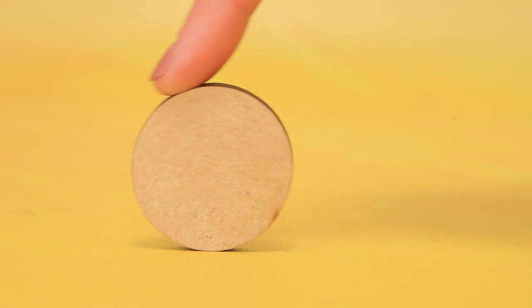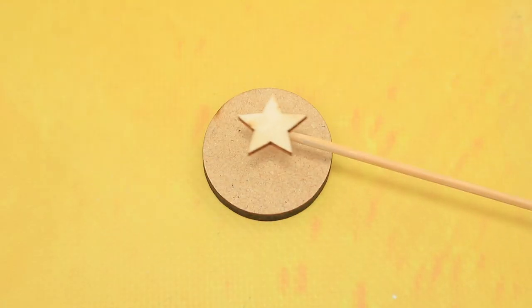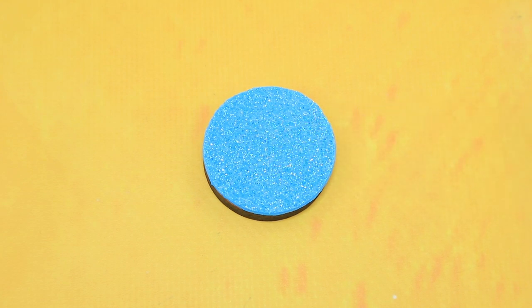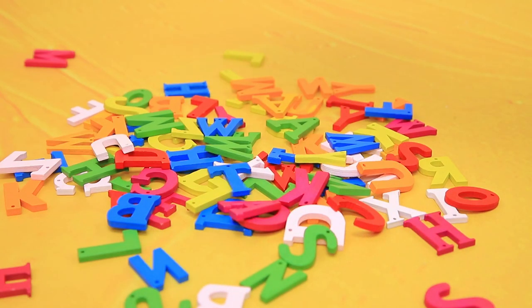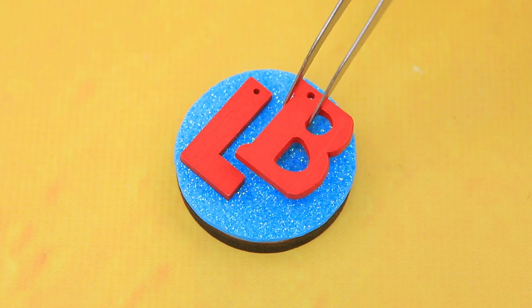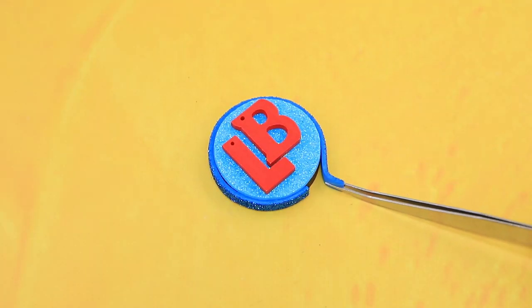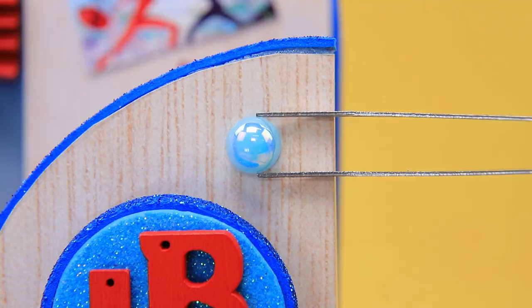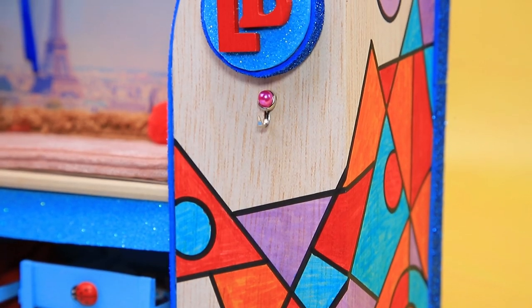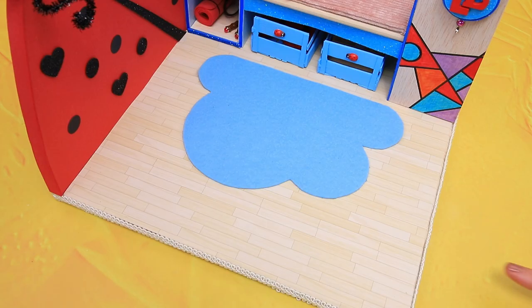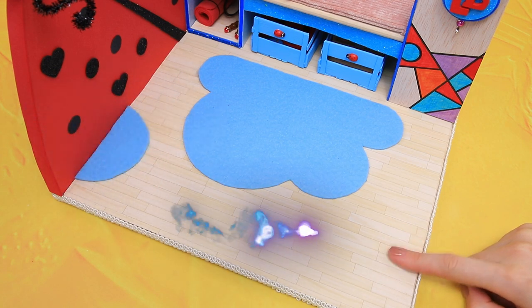A veneer circle can be used for a painting. Wooden letters become ladybug initials. Decorate with blue foam paper. We made a piece for a bag out of half beads and hooks. Add more felt spots to the floor.